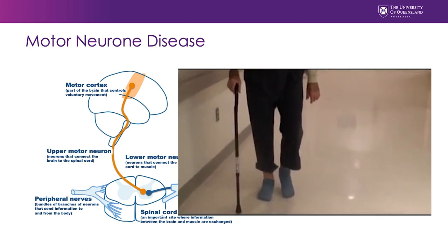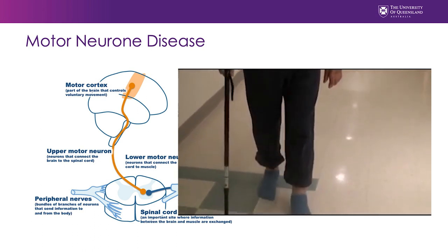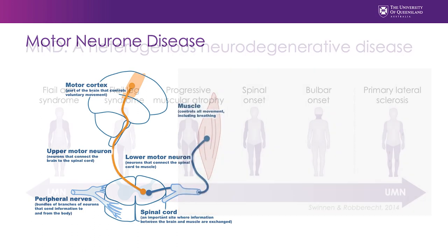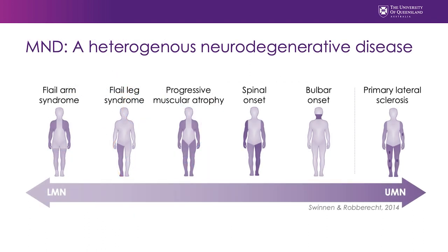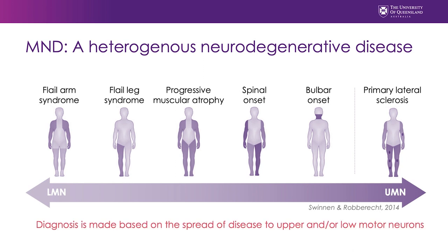This is very commonly seen in people who have what we call lower limb onset disease. Sometimes a patient will present to their clinic and upon examination, it's very clear that they only have upper or lower motor neuron deficits. And over time, if there is no emergence of upper or lower motor neuron deficits, a diagnosis can be made to suggest that they have one of those less prevalent forms of motor neuron disease.